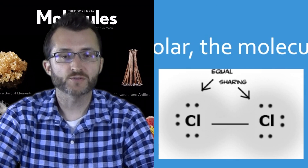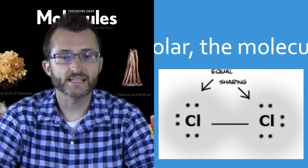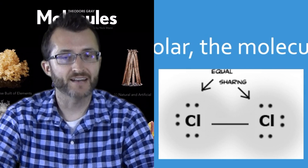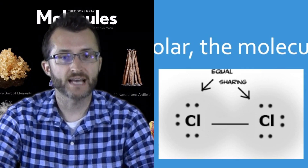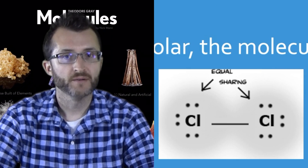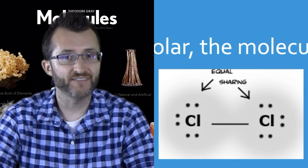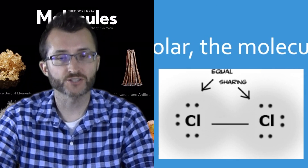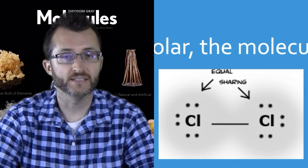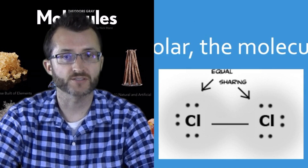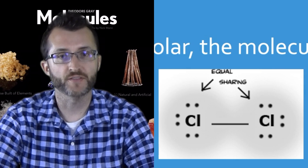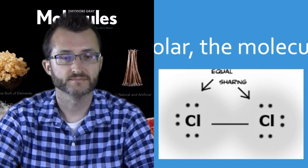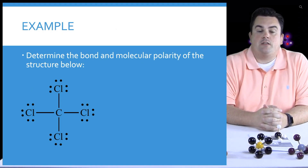If we take a look at our picture, we have chlorine Cl2. We have two of the same atoms, so this should be a non-polar bond. By default, having a non-polar bond means the overall shape of the molecule is also symmetrical, and therefore the molecule is non-polar.